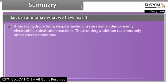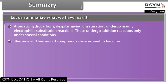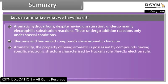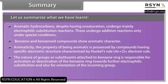Summary. Let us summarize what we have learned. Aromatic hydrocarbons, despite having unsaturation, undergo mainly electrophilic substitution reactions; they undergo addition reactions only under special conditions. Benzene and benzenoid compounds show aromatic character. Aromaticity — the property of being aromatic — is possessed by compounds having a specific electronic structure characterized by Hückel's rule: the 4n+2 pi electron rule. The nature of groups or substituents attached to the benzene ring is responsible for activation or deactivation of the ring towards further electrophilic substitution and also for the orientation of the incoming group.